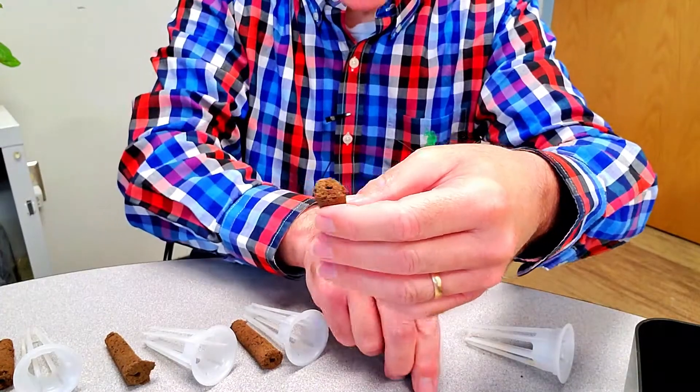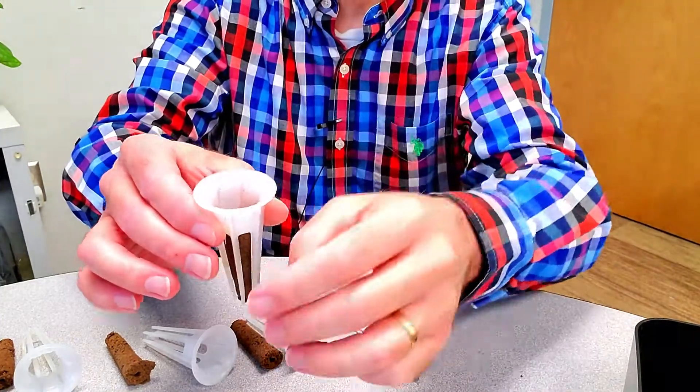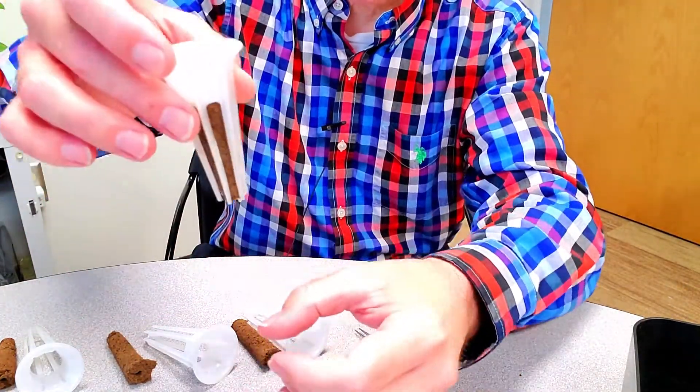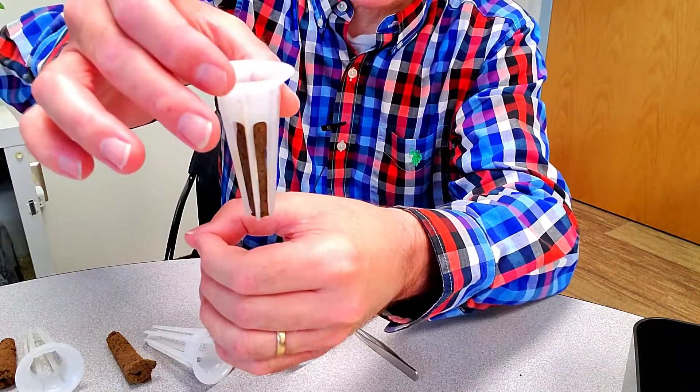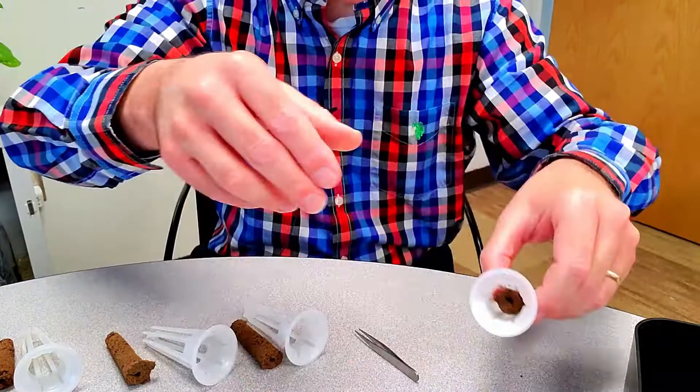Once I have that done, all I need to do is drop that into the AeroGarden basket. Make sure it's down in the bottom. Anybody who has an AeroGarden knows there's a deck with holes already, and you just drop that in and off you go. That's all it is.